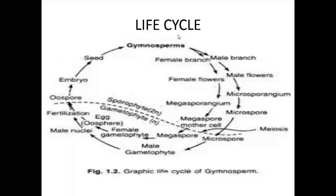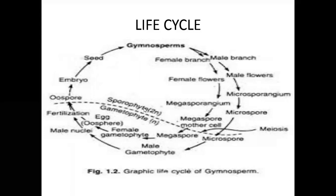The Pinus life cycle, or Gymnosperms life cycle, shows mainly two major phases: the Diploid Sporophyte and the Haploid Gametophyte. The Diploid Sporophyte is a well-developed stage. It is independent — the Diploid Sporophyte is an independent plant.